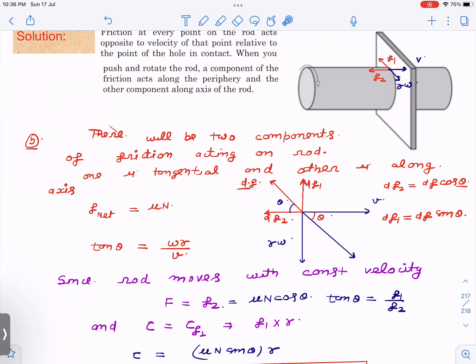Here, df net friction is acting this way. This df is mu dn. dn is the normal acting here. This friction has two components, df2 and df1. df2 is actually opposing its velocity at that local point and df1 is opposing its tangential velocity. Here I have written that df2 equals df cos theta. You can see from here, this is df2, this is df. If you just integrate, you get f2 equals f cos theta and f1 equals f sin theta likewise.